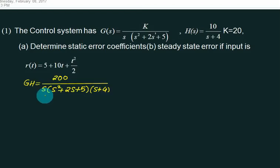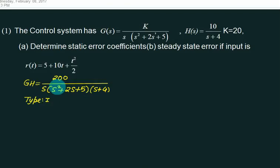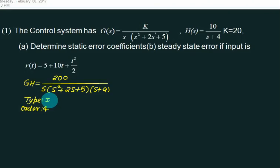Is this a type 0 system or type 1 system? The maximum power of s in the denominator is 1, 3, 4 — so the order is 4. Order you have to write in numerical letters, and type you have to write in Roman numerals.